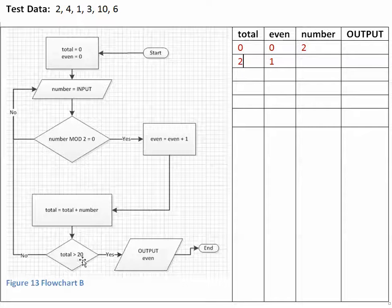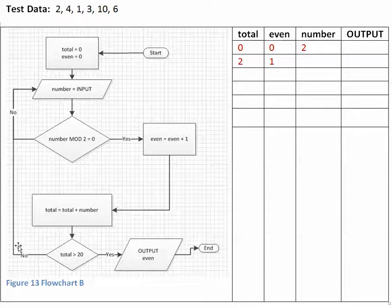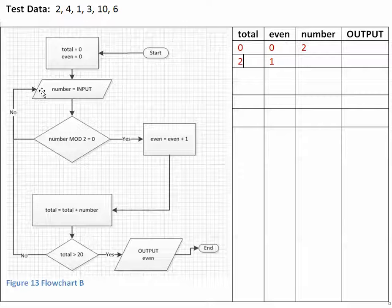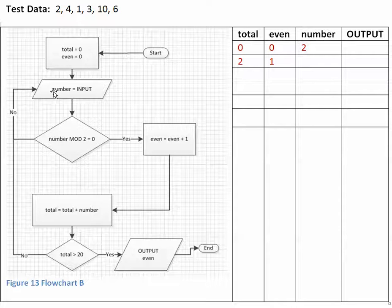Now we ask: is total greater than 20? The answer is no. So we follow the loop back and number is assigned the value of the next input, which is number 4.